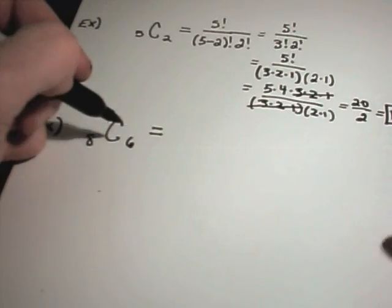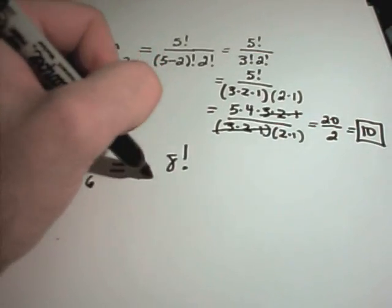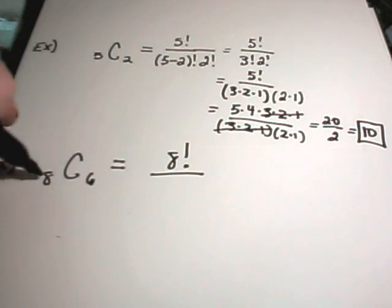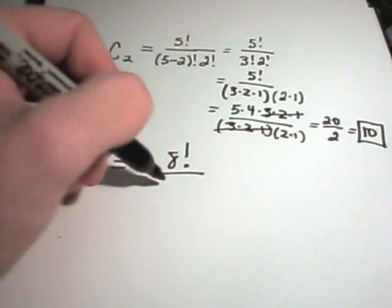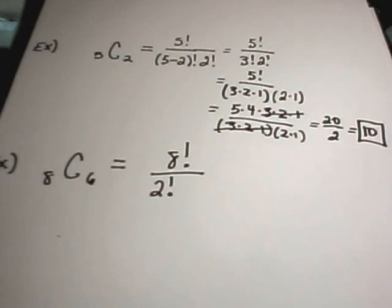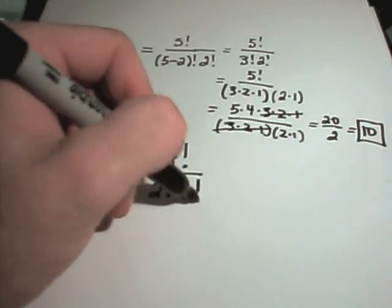So five choose two is equal to the number ten. Likewise, eight choose six. You get eight factorial on the top. And all you basically do is you subtract the two numbers. So eight minus six is going to be two factorial, and then we've got six factorial.